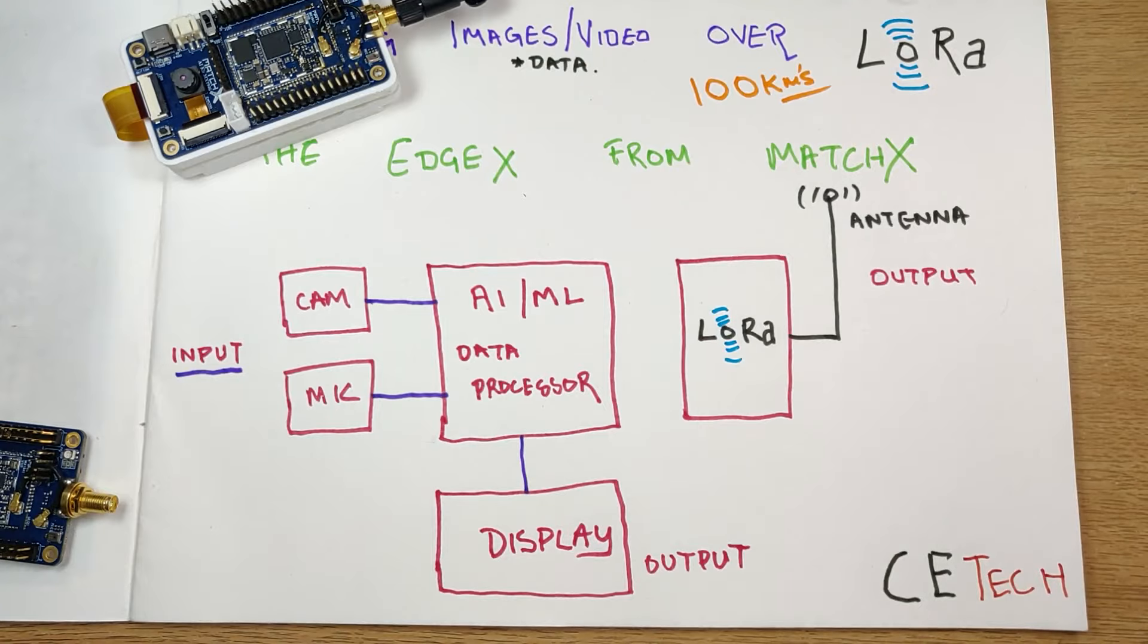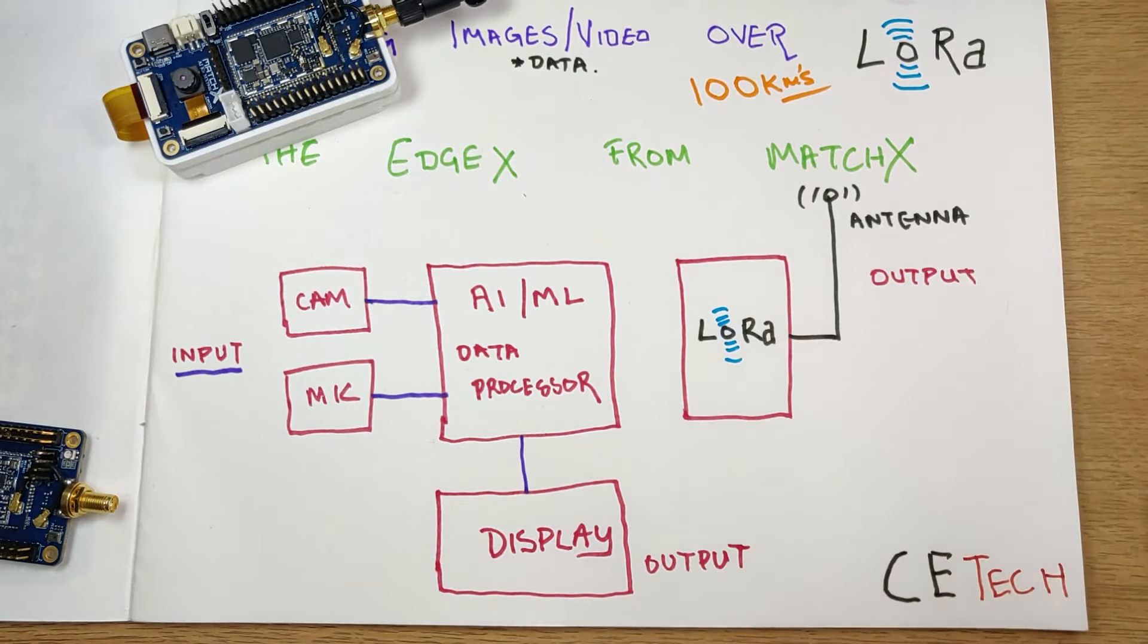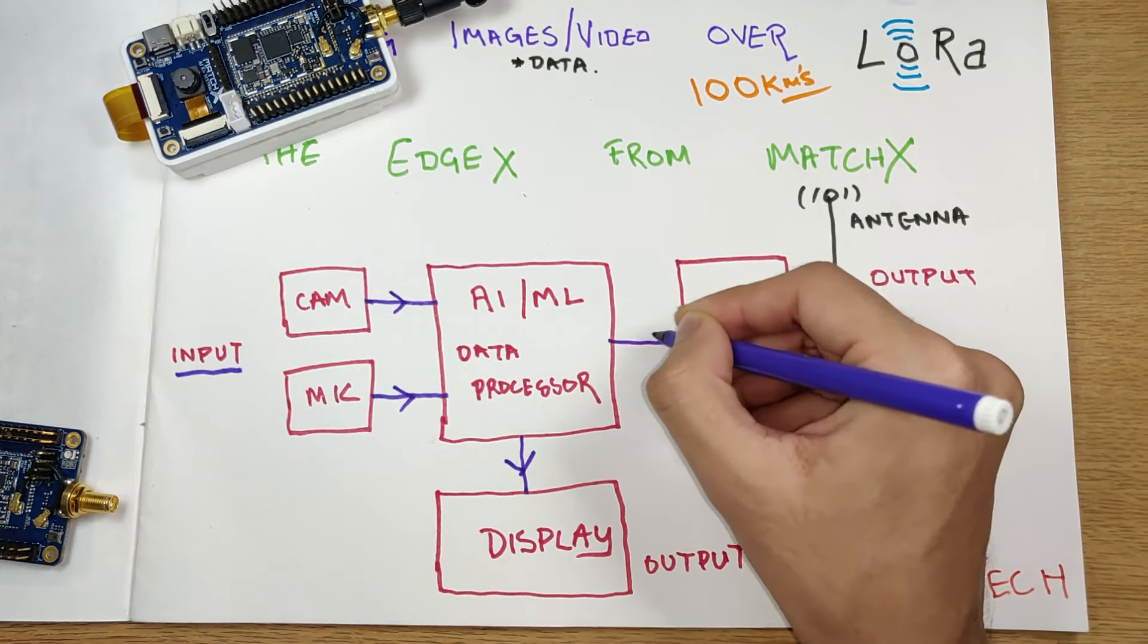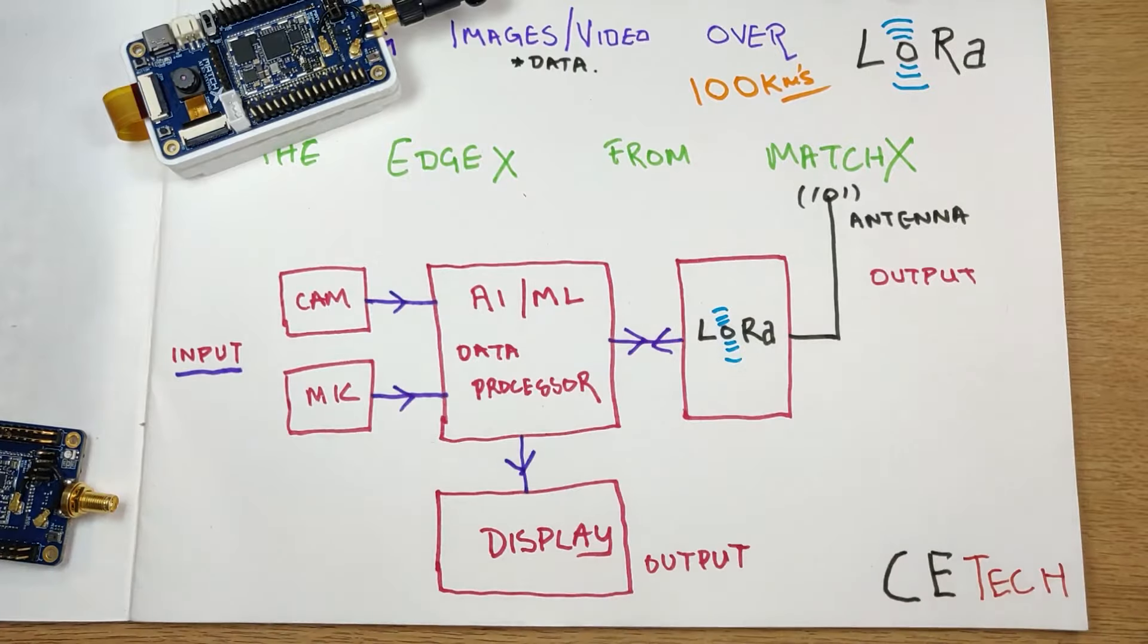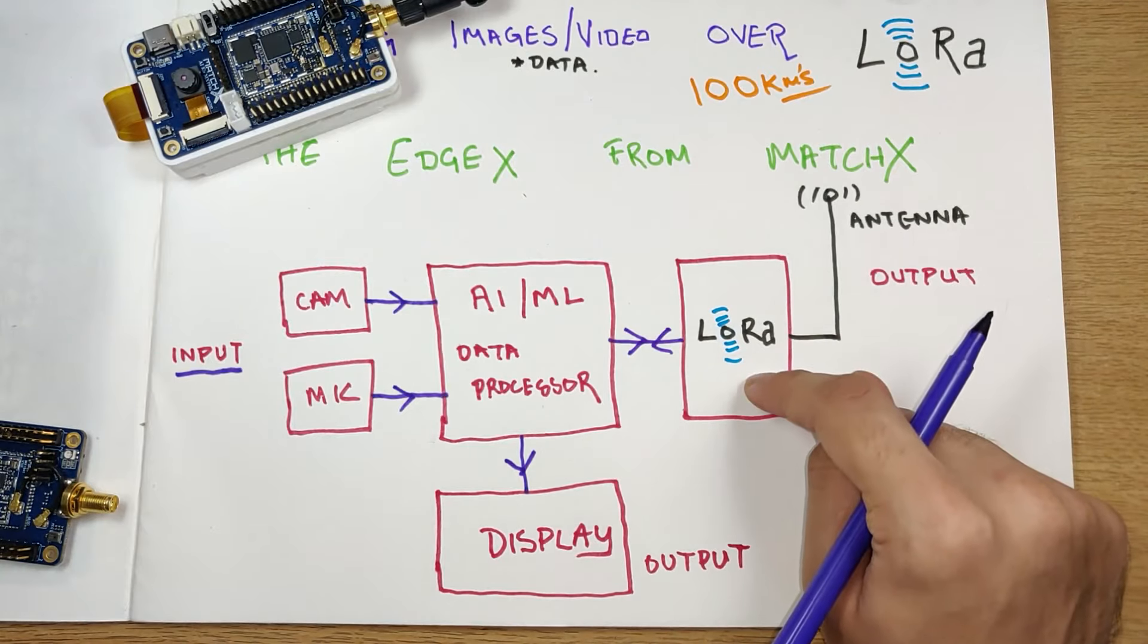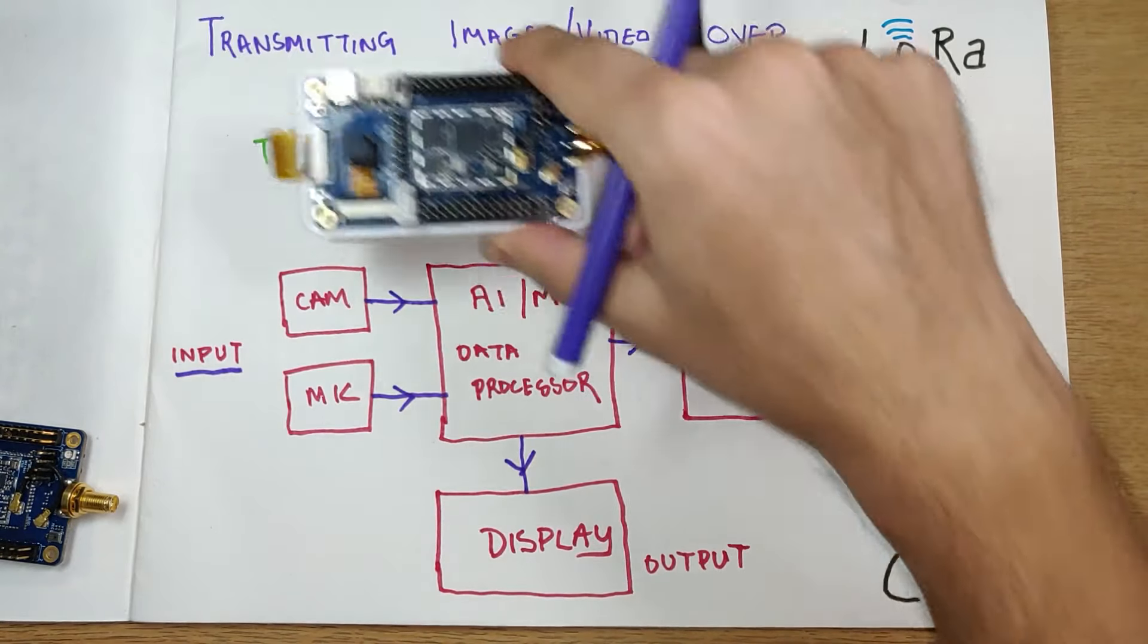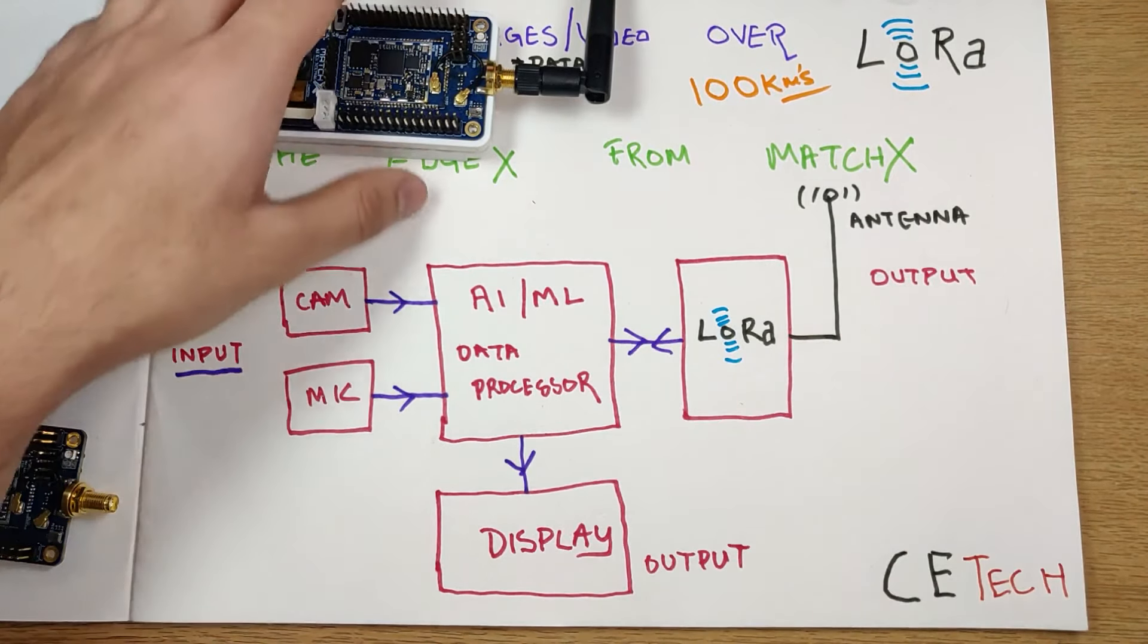You will be able to send the data present in the picture to hundreds of kilometers of distance without even using internet or any paid subscription over LoRa. The display is an output device, so data from the AI ML data processor goes to the display. LoRa is a two-way connection. Data can go out through the antenna and also come in through the antenna to the LoRa module, then to the data processor which controls the GPIO pins and can display on the display.